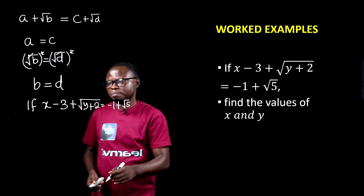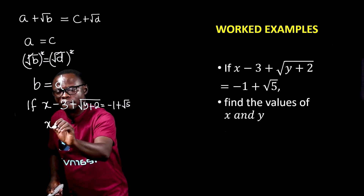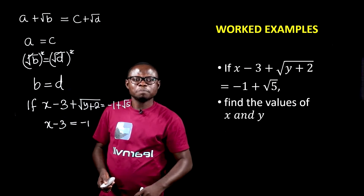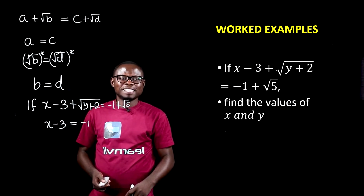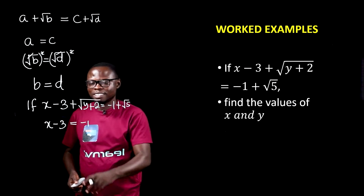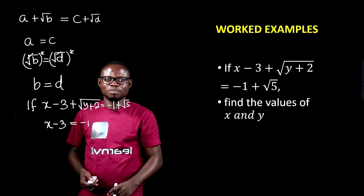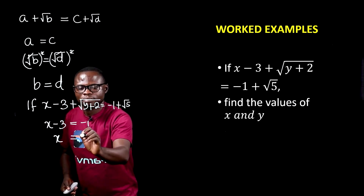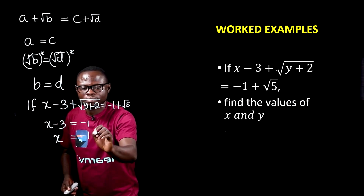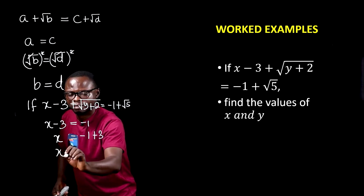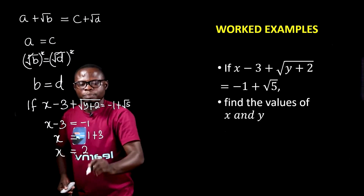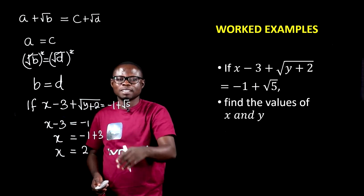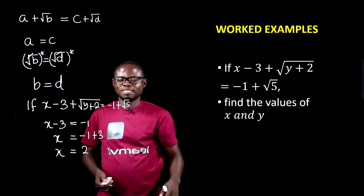So this means that x minus 3 is equal to negative 1. From this, we can solve for the value of x. So x minus 3 is equal to minus 1, x is equal to minus 1 plus 3, and then x is equal to 2.